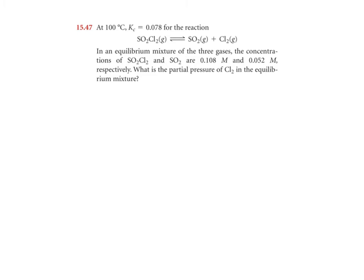All right, number 47. This one's a little faster, a little easier. At 100 degrees Celsius, K sub C equals 0.078 for the reaction SO2Cl2 in equilibrium with SO2 plus Cl2. In an equilibrium mixture of the three gases, the concentrations of SO2Cl2 and SO2 are 0.108 molar and 0.052 molar, respectively. What is the partial pressure of Cl2 in the equilibrium mixture?